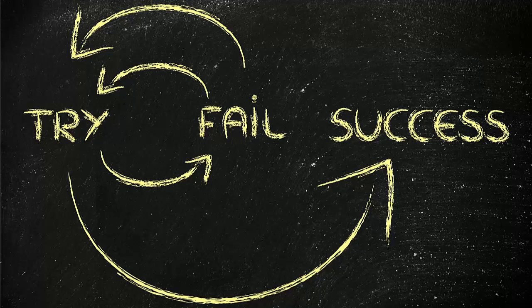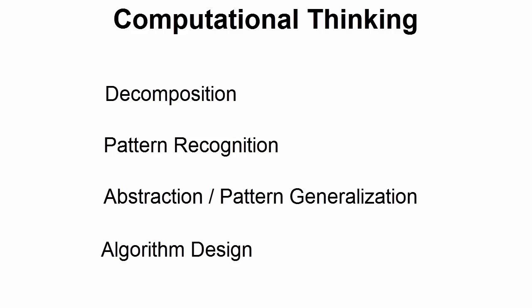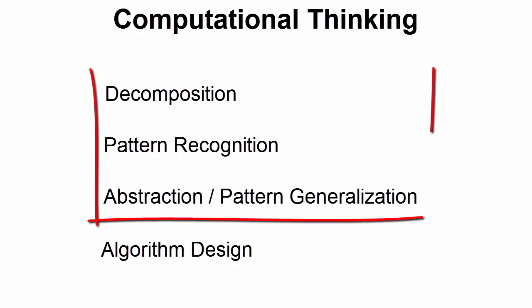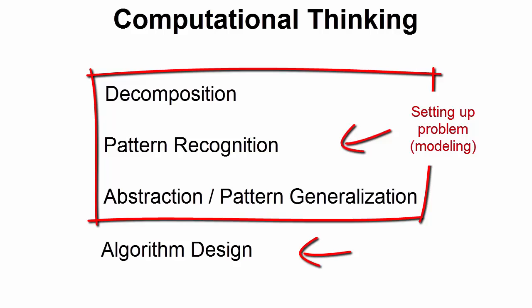As mentioned earlier, the steps involved in computational thinking do not always occur in a nice neat sequence. In reality, a problem may be decomposed, patterns identified, abstracted, and an algorithm tested and failed. At that point, it is back to the drawing board in rethinking parts of the problem. In general, decomposition, pattern recognition, and abstraction can be thought of as steps in setting up the problem, or modeling, while algorithm design can be thought of as the operation to solve the problem. However, sometimes the modeling and operation steps are revisited and repeated multiple times in order to refine and find a workable solution.